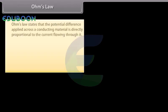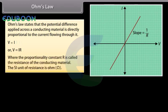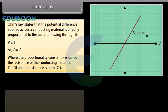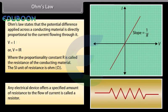Ohm's Law states that the potential difference applied across a conducting material is directly proportional to the current flowing through it: V is directly proportional to I, or V equals IR, where the proportionality constant R is called the resistance. The SI unit of resistance is the ohm. Any electrical device that offers a specified amount of resistance to the flow of current is called a resistor, represented by a standard symbol.